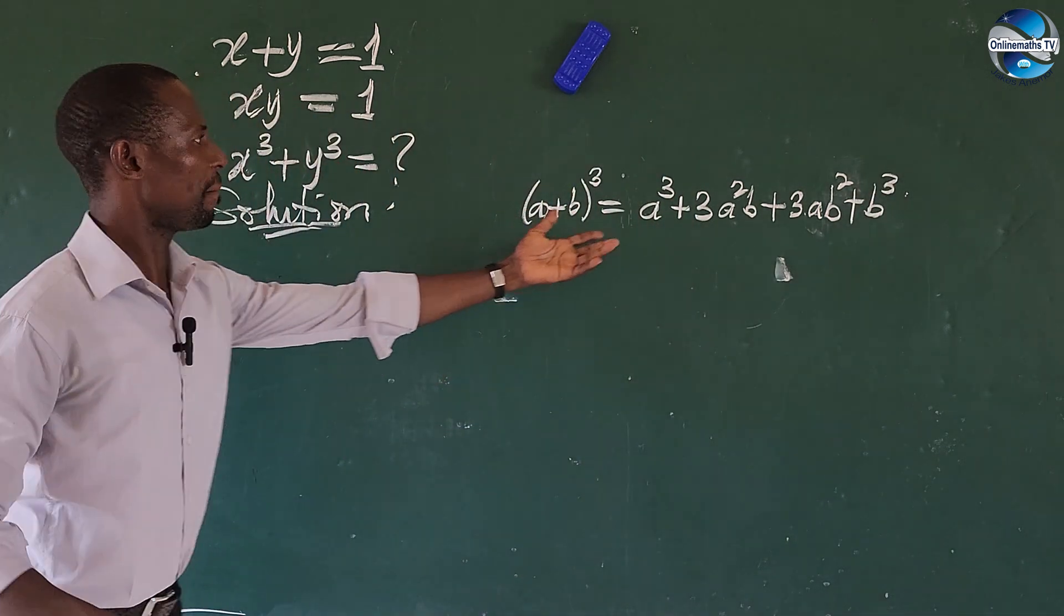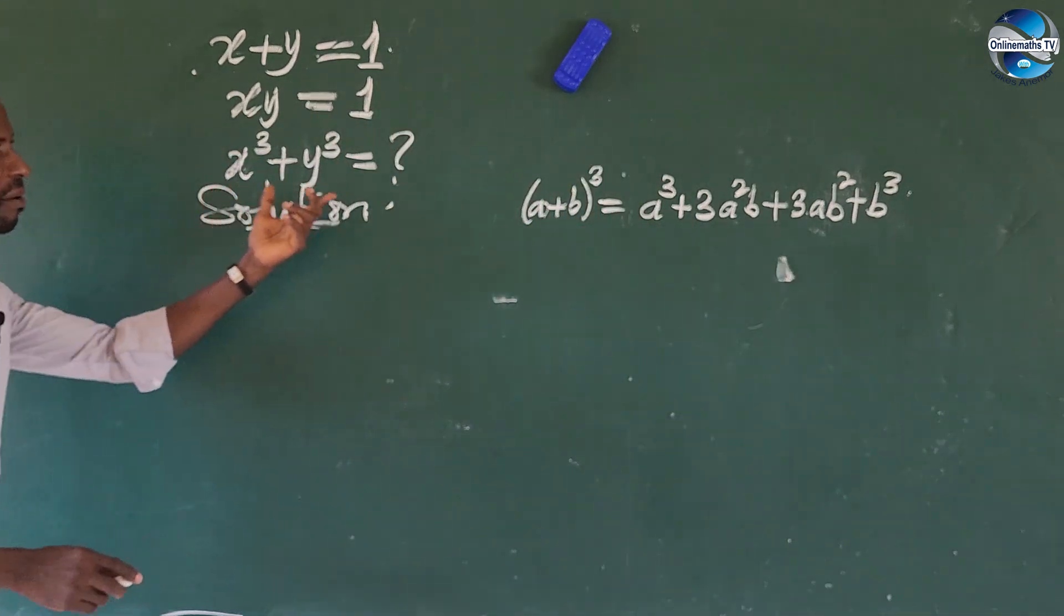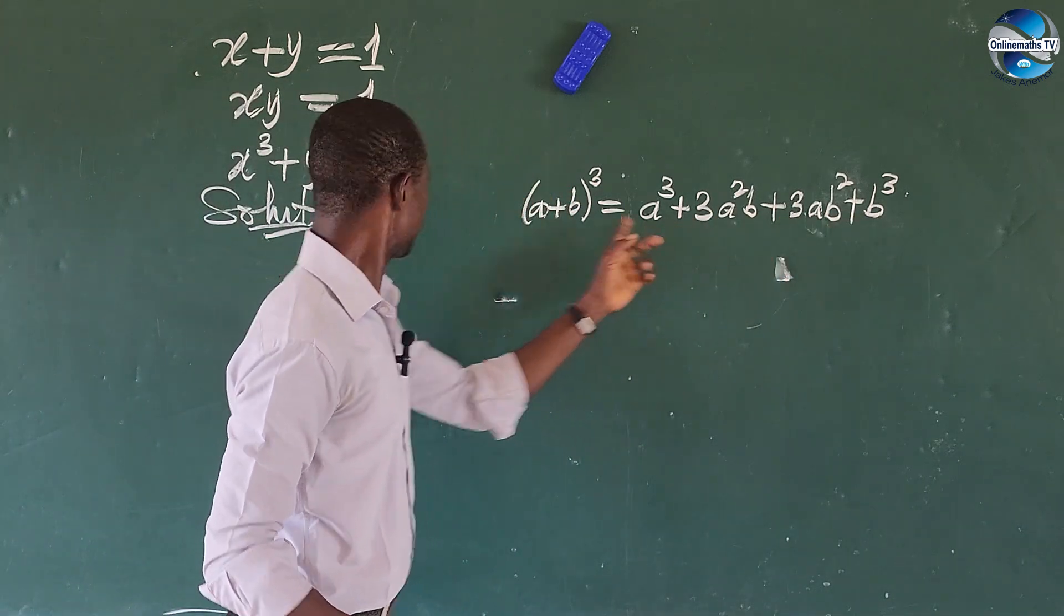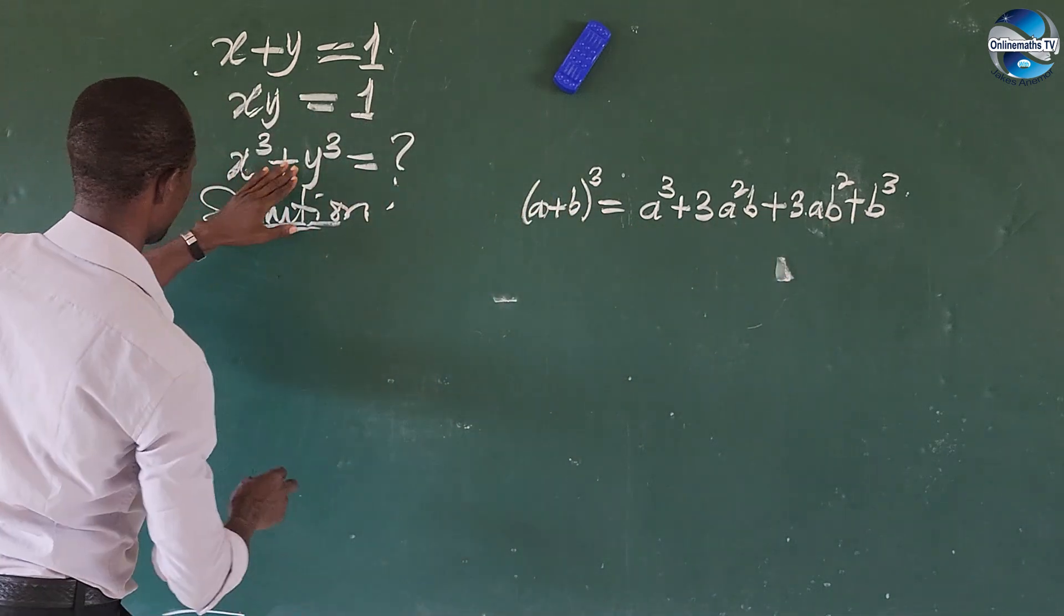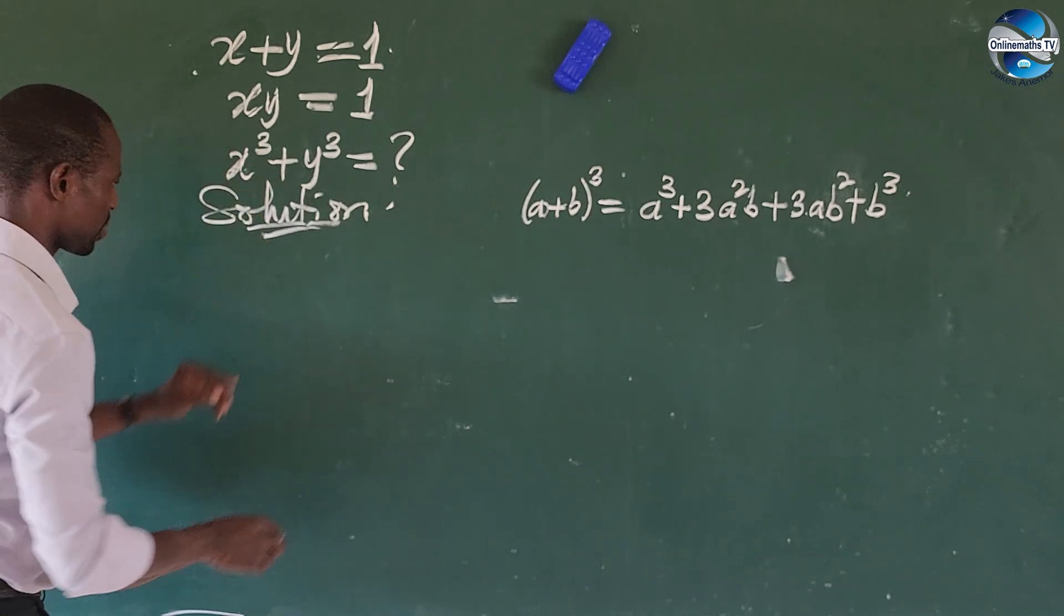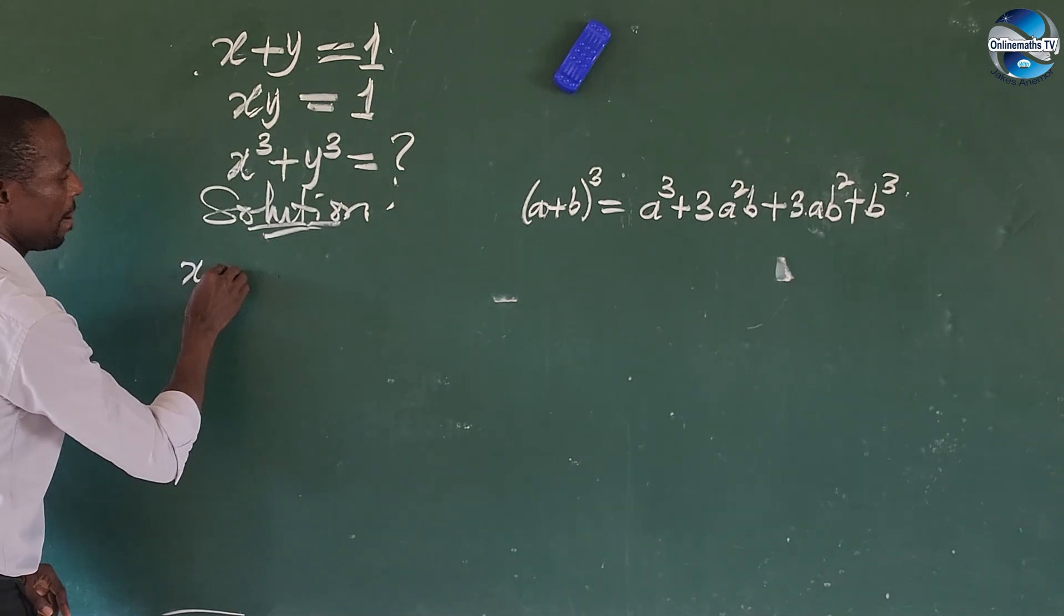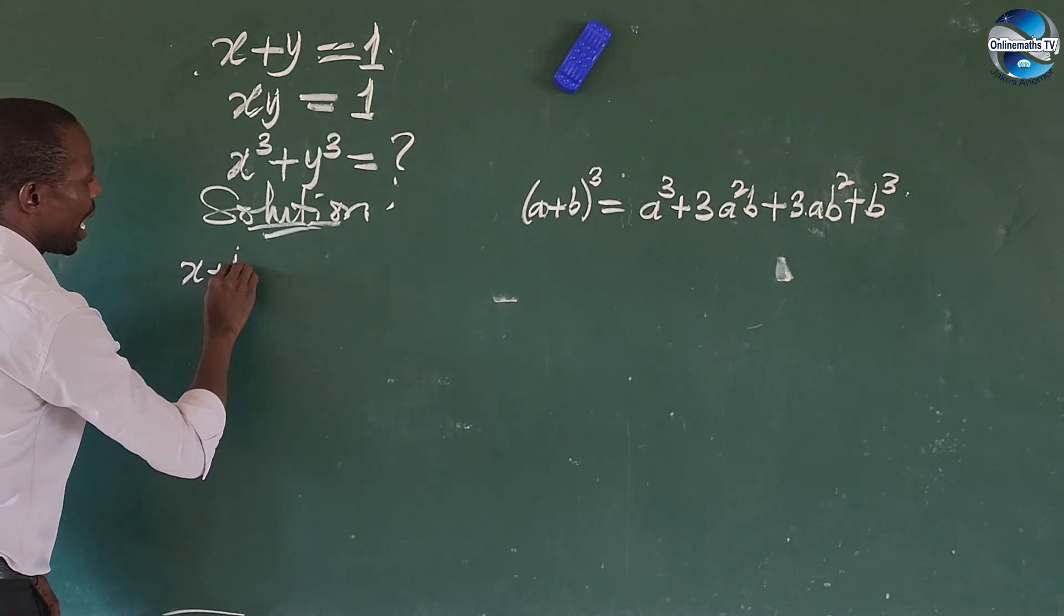So if we apply this here, we can bring out something like this. We can bring this and this together to have something like this. So we can rewrite this expression as x plus y to the power of 3.